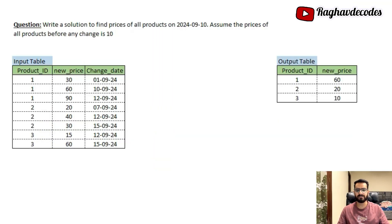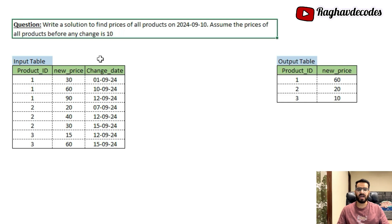The problem we are going to discuss today is: we have to write a solution to find prices of all products on a particular date, which is 10th of September. We have to assume that the prices of all products before any change was 10 rupees.